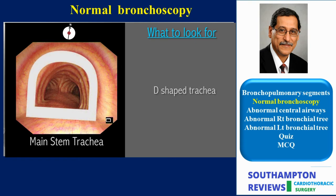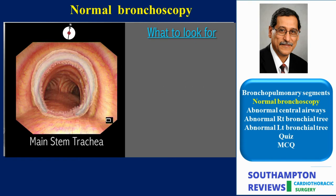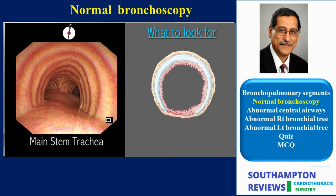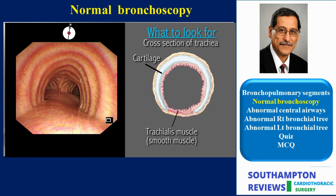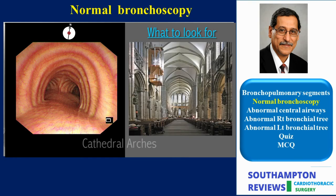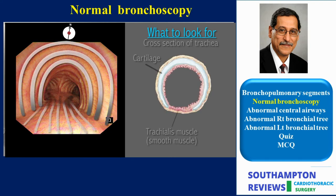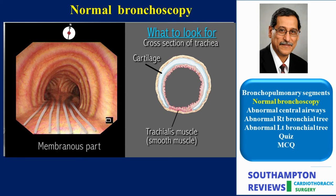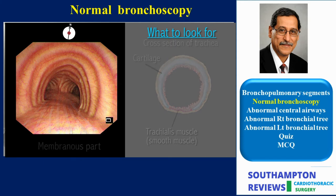The normal trachea has a D-shaped cross-section. The architecture of the scaffolding of the trachea is preserved by the C-shaped cartilages, which form what is known as the cathedral arches. The trachealis muscle forms the membranous part of the trachea and shows as longitudinal mucosal folds that make the flooring under the cathedral arches. The membranous part completes the circumference of the trachea and closes the C into a D-profile.